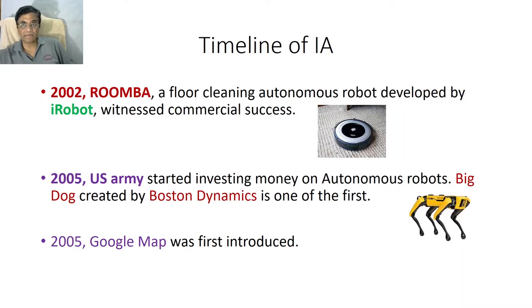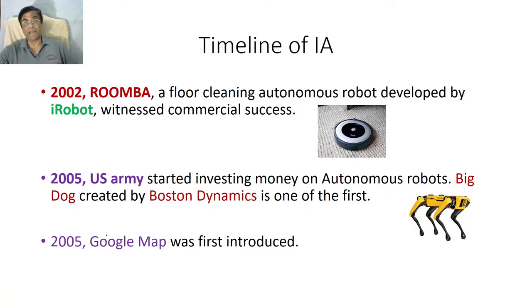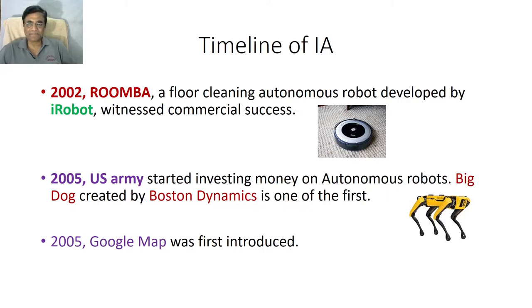Roomba has sensors and it learned in a very simple way to avoid obstacles using sensory data. And then another disruptive thing happened in 2005 with Google Maps. Everybody is now using Google Maps on their Android phone to navigate and locate themselves. The technology Google is using for developing such products is amazing, based on machine learning and artificial intelligence.